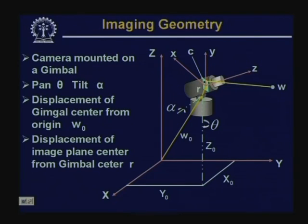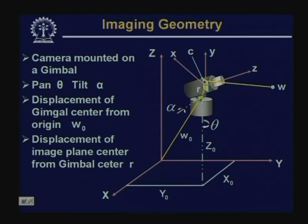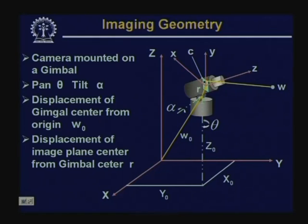In the last class, we had an imaging setup where the 3D world coordinate system is given by capital X, Y, Z. In this world coordinate system, we placed a camera with coordinate system small x, y, z, mounted on a gimbal displaced from the world origin by vector w-naught, with the camera center displaced from the gimbal by vector r. The camera is given a pan of angle theta and a tilt of angle alpha.